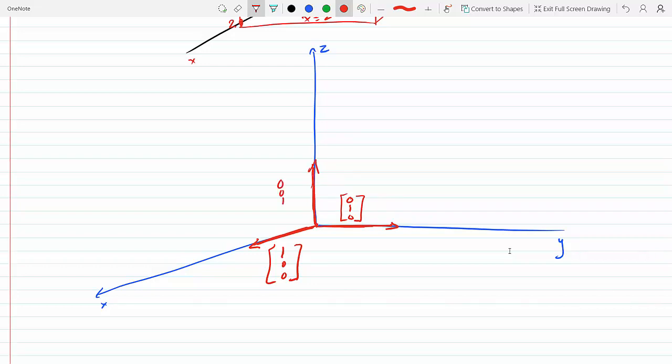So 2 times column 1: 2 times column 1 would be [2, 0, 0], plus...